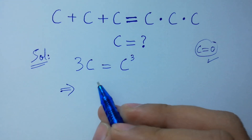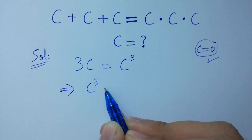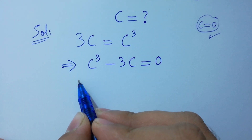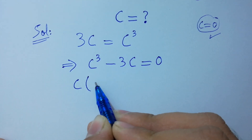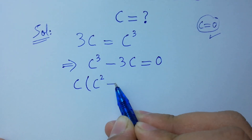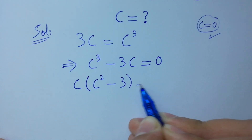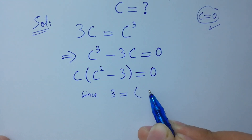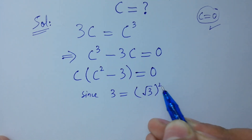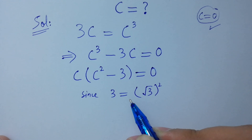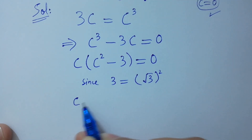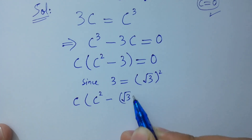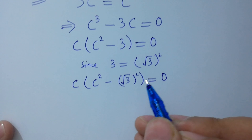This is the same as c cubed minus 3c equal to 0. Since c is common, we factor to get c times (c squared minus 3) equal to 0. Since 3 equals the square root of 3 squared, we can write c times (c squared minus square root of 3 squared) equal to 0.